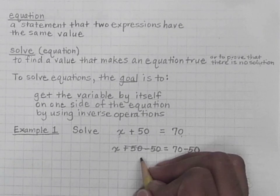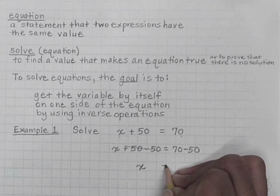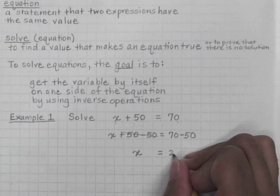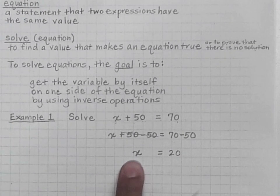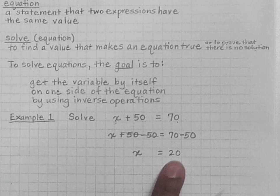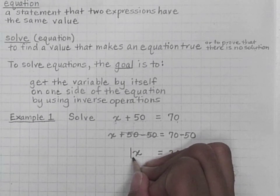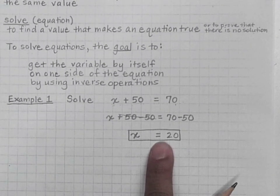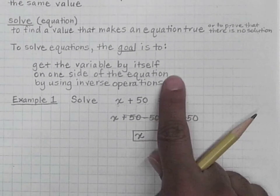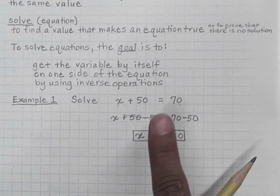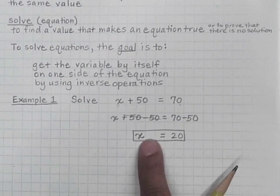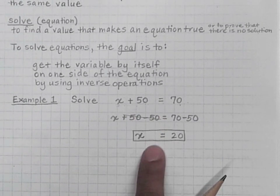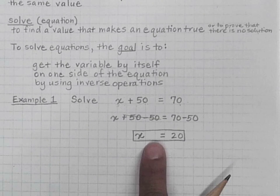Now I'm left with x equals, and what is 70 minus 50? It's 20. I now have the variable by itself and I'm being told it equals a specific value. I'm going to box it. Now I'm going to see if this value does make the equation true. To do that, I'm going to substitute the value of x being 20 back into the original equation. Once I find a value, I have to see if it makes the equation true.